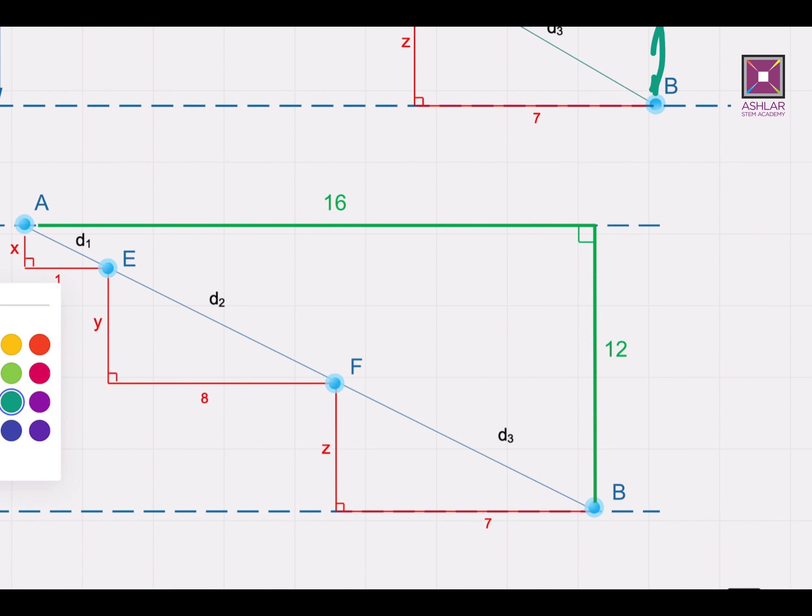And this simply gives the hypotenuse here, which simply gives the minimum value of the function F. So since this is a right triangle, the value of F min would be square root of 16 squared plus 12 squared. So F min turns out to be 20.